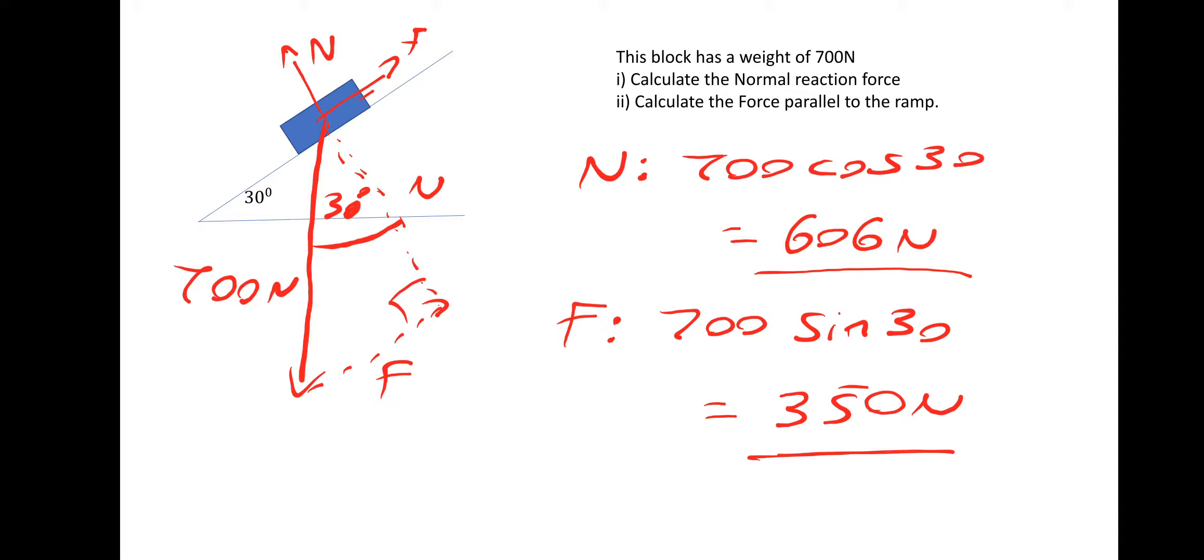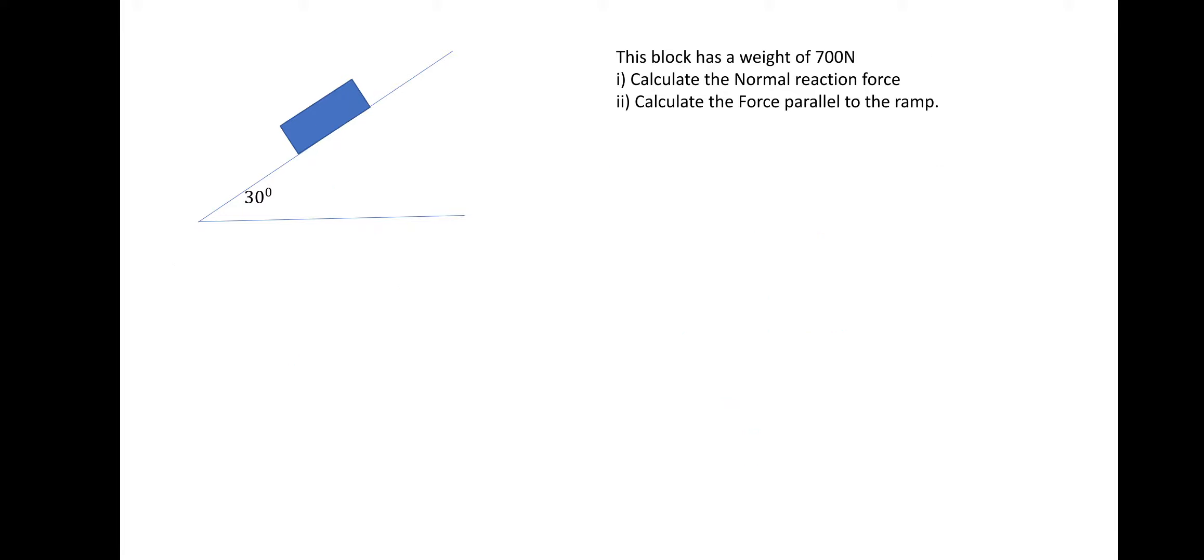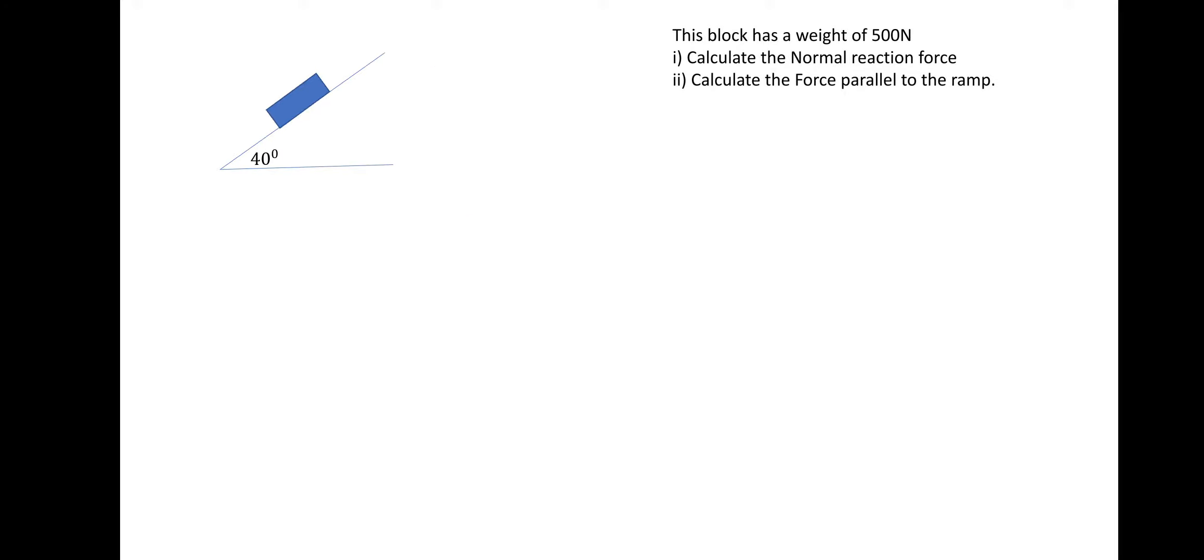Feel free to practice that one again. I've got another example on the next page. Same again, this block has a weight of 500 Newtons and we're going to calculate N and F again. So weight comes from the centre of the block, 500 Newtons. So I know that that's N and that's F, and this angle is 40 degrees.